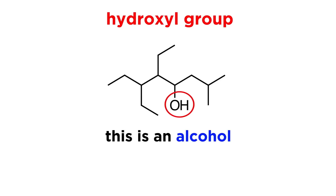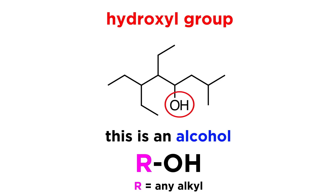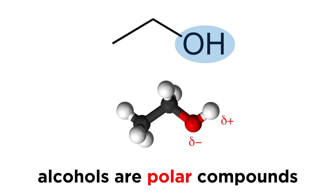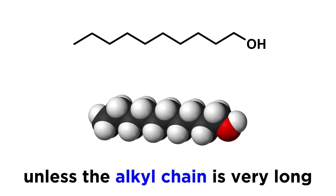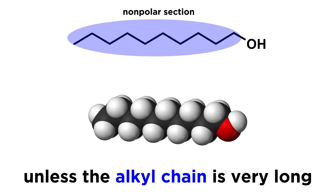One example of a functional group is the hydroxyl group. A molecule with a hydroxyl group is referred to as an alcohol, and we can represent these as ROH, where R represents any alkyl, which means just some amount of hydrocarbon. Hydroxyl groups are quite polar, so alcohols tend to be polar compounds. The exception would be if the alkyl chain is exceptionally long,